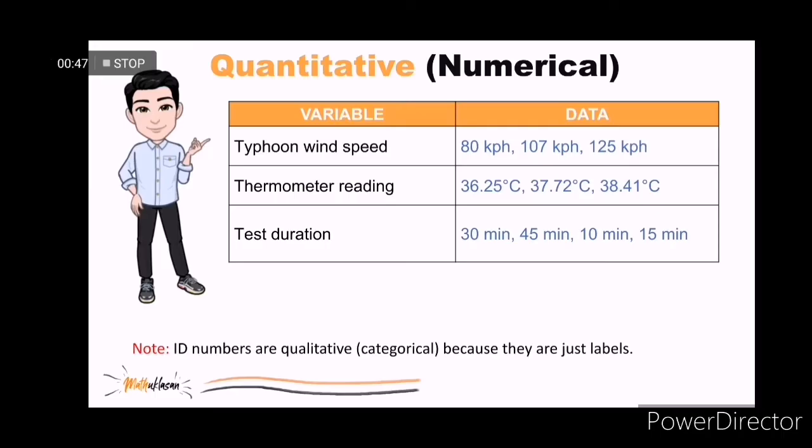Take note that ID numbers are qualitative or categorical because they are just labels. They can be in a form of numbers but it's still a label so ID numbers and other identification numbers or barcodes are all under qualitative data.